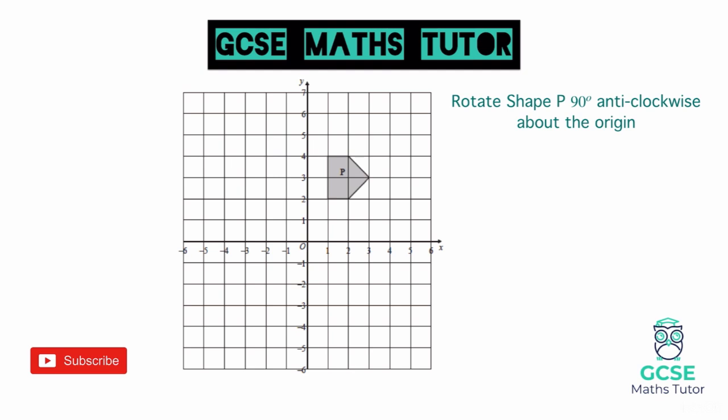We're going to use tracing paper for this. First, get some tracing paper and put it over the top. Keep your tracing paper nice and flat — that makes it much easier to do a 90 degree or 180 degree rotation, because it's going to land flat again. Now trace over the top of the shape with your pencil. Then place the pencil on the point of rotation, which in this case is the origin.